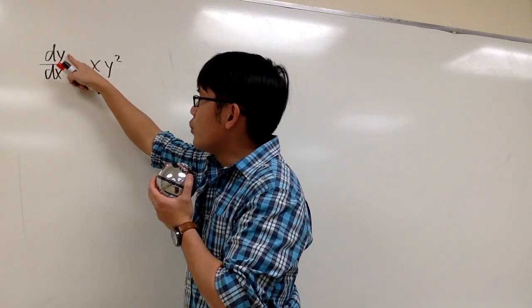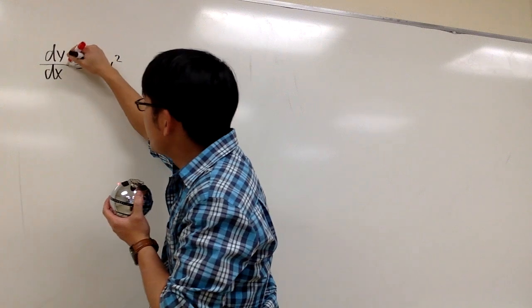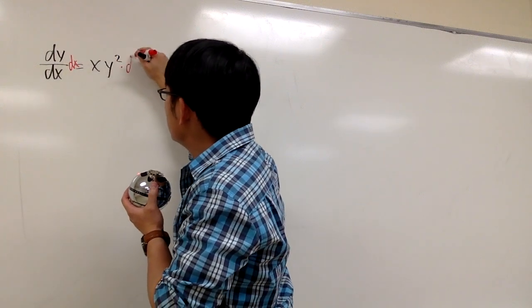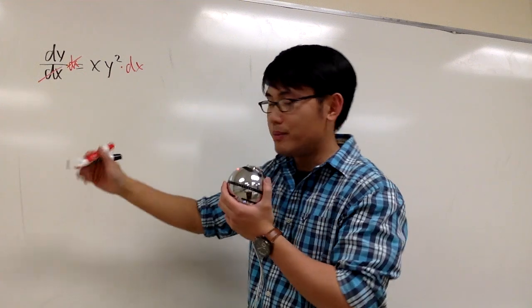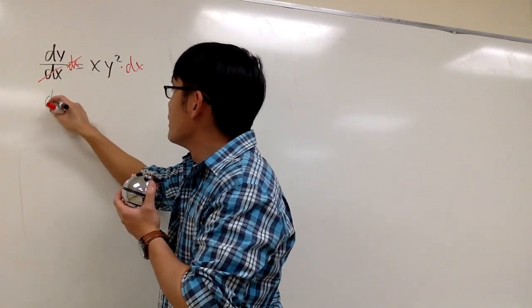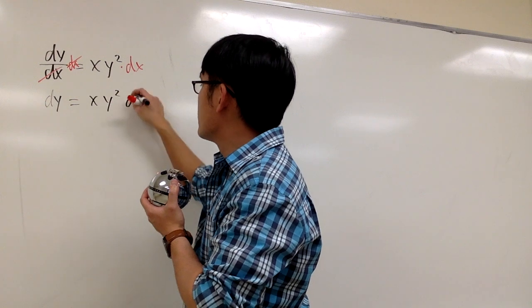We're looking at this as the differential y divided by the differential x. So I get to multiply both sides by dx, so that the dx cancels. So here's just a detail. So we have dy is equal to x y squared dx.